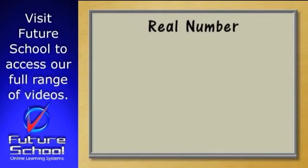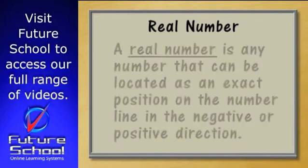Because the square root of 2 is an exact length, it is said to be a real number. A real number is any number that can be located as an exact position on the number line in the negative or positive direction.